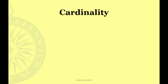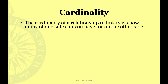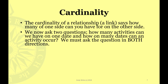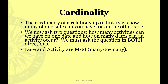Cardinality is something that confuses people. The cardinality of a relationship says how many on one side can you have on the other. We have to ask two questions: how many activities can we have on one date, and on how many dates can an activity occur? We must ask the question in both directions. Date and activity are in a many-to-many relationship — on a particular date you can have many activities, and one activity, say going swimming or eating breakfast, can happen on many dates. So it's a many-to-many relationship.